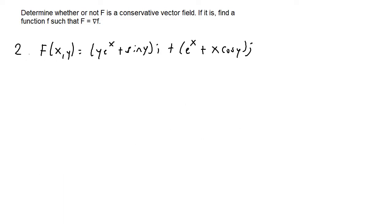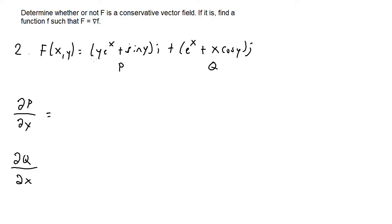For number two, f(x, y) equals y times e to the x plus sine of y times i, plus e to the x plus x cosine y times j. Here y times e to the x plus sine of y is p, and e to the x plus x cosine y is q. We set the partial derivative of p with respect to y equal to the partial derivative of q with respect to x. The partial of p with respect to y gives e to the x plus cosine y, and the partial of q with respect to x also gives e to the x plus cosine y. Since these are equal, the vector field is conservative.